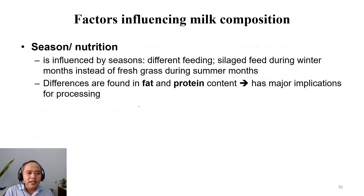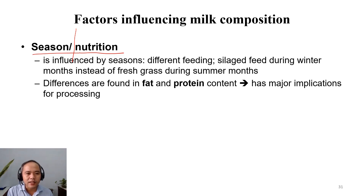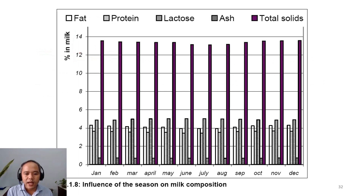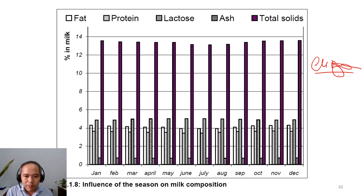The second factor is the season and nutrition. These go together because the season determines the nutrition. Along the months of the year, the feed that dairy cows eat is not the same. For example, in developed countries like in Europe, in the summer, cows eat a lot of fresh grass out on the field.